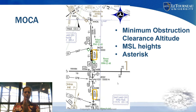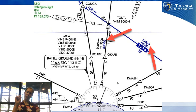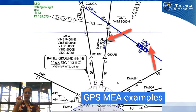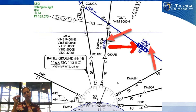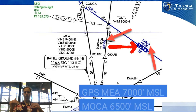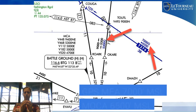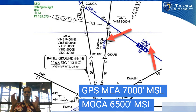It may be fine to operate at the MOCA if you're using GPS for navigation, since you don't need ground-based nav aid reception to fly that airway — just keep in mind it doesn't guarantee ATC communication. For the GPS MEA, it has a little 'G' at the end. For example, on T-route T276, the GPS MEA is at 7,000 feet, guaranteeing ATC communication and obstacle clearance. If you needed to descend due to icing, you could go down to 6,500 feet and still be clear of obstacles — however, that 6,500 feet with an asterisk is the MOCA, meaning ATC communication is not guaranteed.